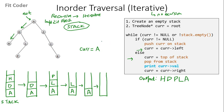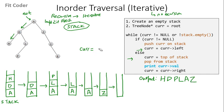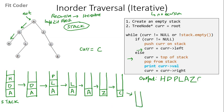Current points to the right of A, which is Z. Current is not null so we push Z, and current points to the left of Z which is null. We again come in the while condition: current is null but the stack is not empty, so we come into the else condition. Current points to the top of the stack, we pop from the stack — stack is again empty — we print Z, and current points to the right of Z which is C. Current is not null so we push C and current points to the left of C, which is null. Stack is not empty so we come into the else condition: current becomes C, we pop from the stack — stack is now empty — and we print C.